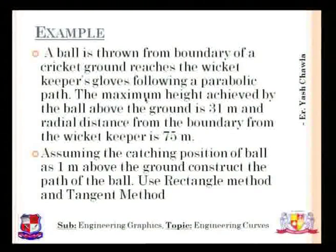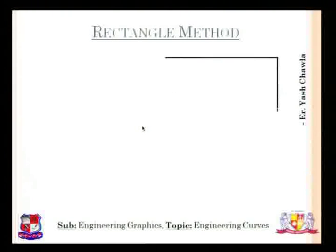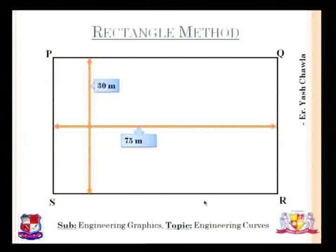A cricketer near the boundary throws the ball and the wicket keeper gloves it. What basically happens is that the path traced is like a curve, and 1 meter above the ground it is caught by the wicket keeper. So let us see how the construction is made using the rectangle method. The base width is 75 mm and the axis height is 30 mm, and we go 30 minus 1, that is 29. First we create a rectangle — the radial distance PQ or SR is 75 mm.